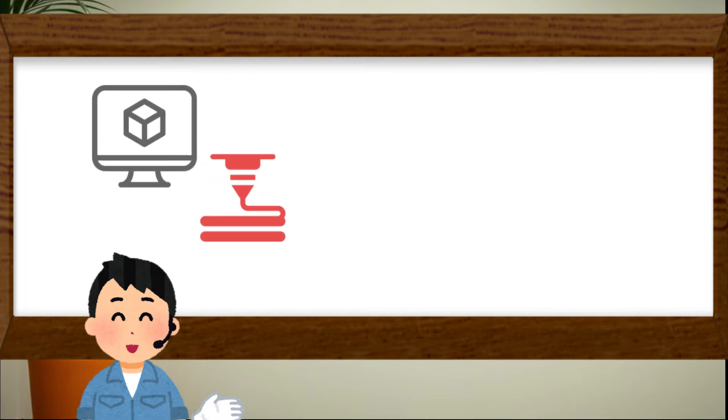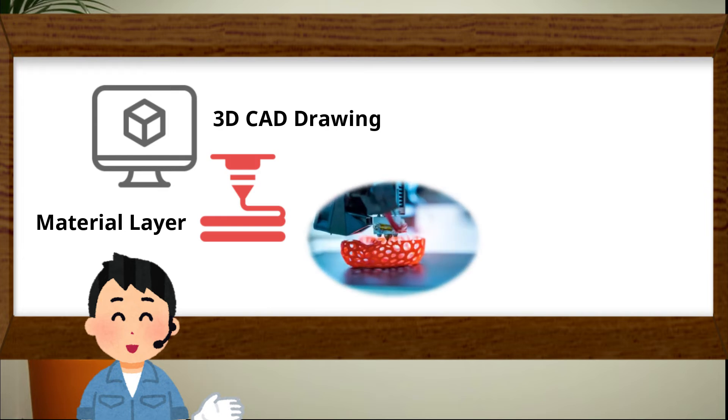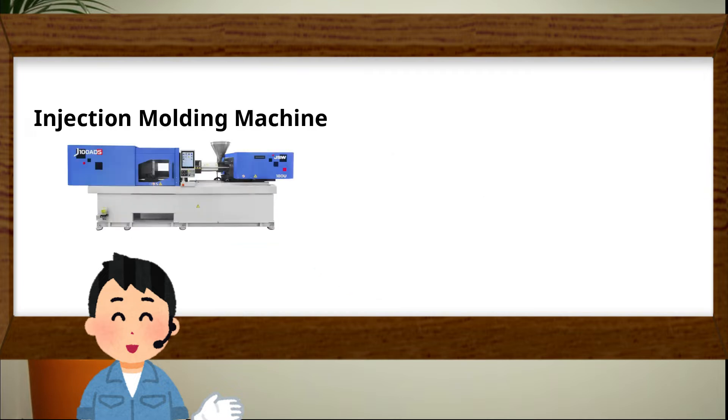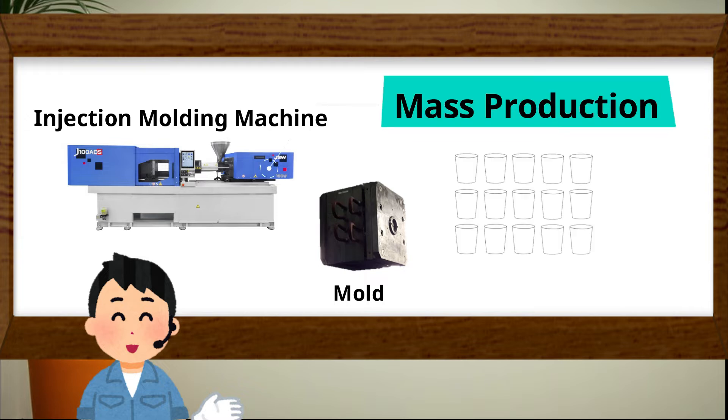3D printer is a device to make 3D model by making material layer based on 3D CAD drawing data. 3D printer can make complex structured plastic product by 3D CAD drawing easily, so it is suitable for high mix low volume production. On the other hand, injection molding makes product by mold in faster cycle time, and it is suitable for mass production.